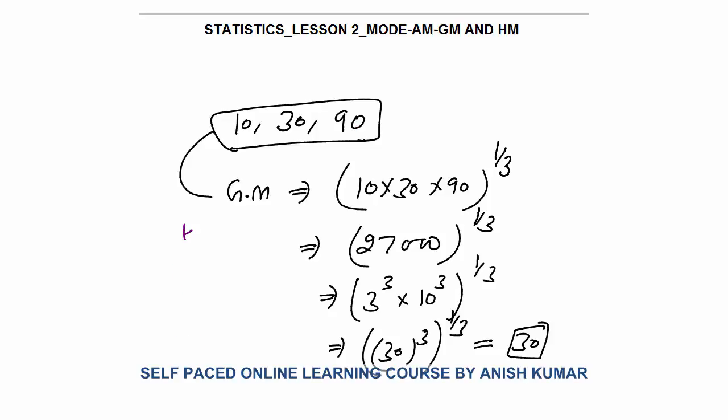Harmonic mean of these numbers, harmonic mean for these numbers would simply mean divided by 3 upon 1 by 10, 1 by 30 and plus 1 by 90. You can take the algorithm and you can calculate the value. Arithmetic mean simply the average that is 10 plus 30 plus 90 by 3. And you can check that arithmetic mean will be greater than the geometric mean and it will be greater than the harmonic mean.